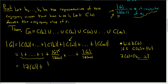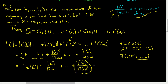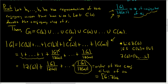To recap: each of those terms is the order of the conjugacy class of A sub k, which equals the index of the centralizer of A sub k in G, as proven in a previous video. So it's a pretty clean proof, but you need to establish a lot of results to get here. I hope that made some sense.